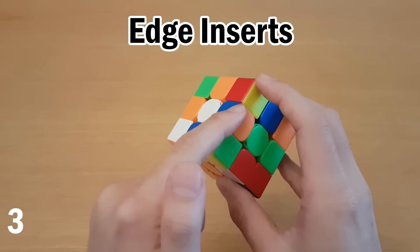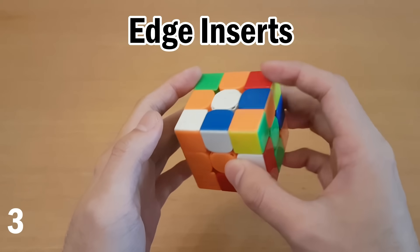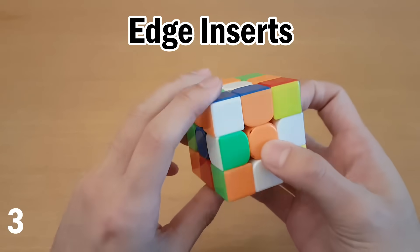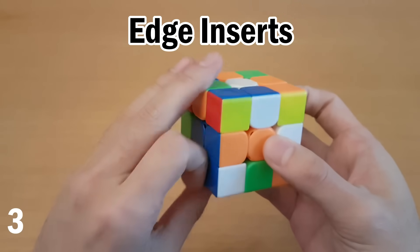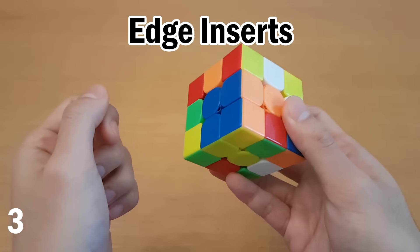And now a similar case where the edge is oriented the other way. In CFOP, what you would do if you were doing keyhole is you'd have to do F moves to insert this. But in Roux, you just move that away, and you can just insert this one with one F move, and then go back.